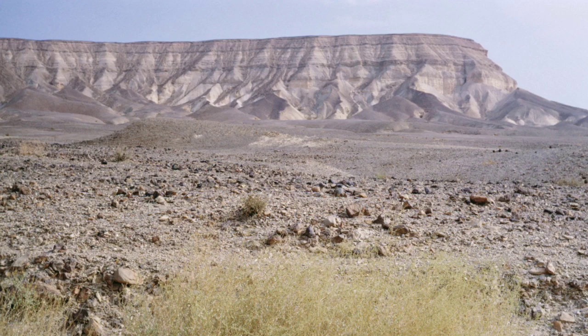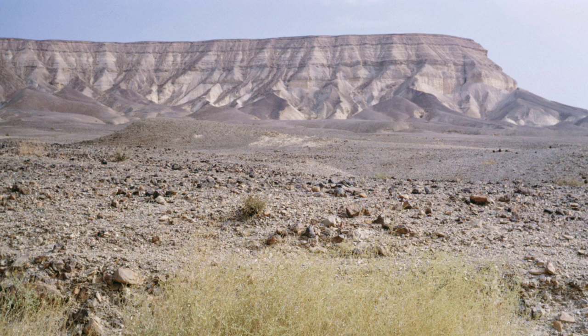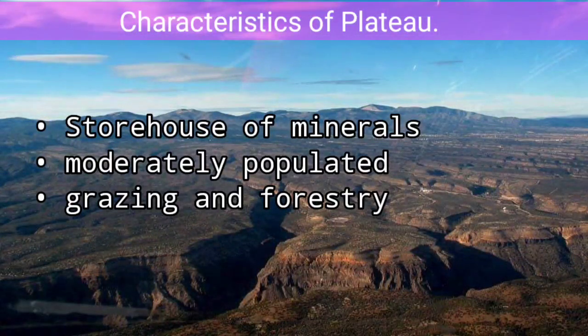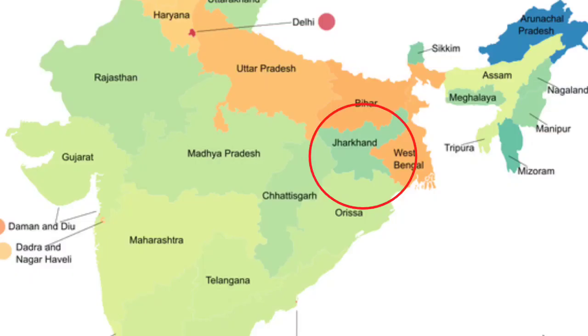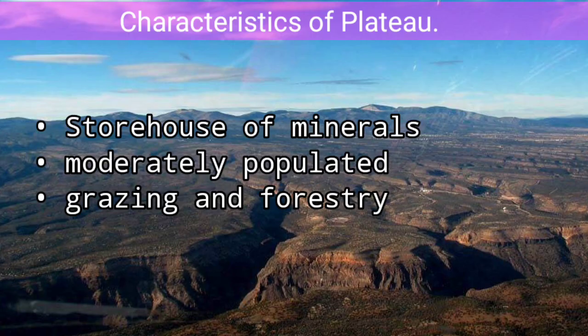An elevation of 150 meters above sea level with a flat top can be considered as a plateau. Plateaus have different characteristics: they are a storehouse of minerals, population is very moderate, and grazing and forestry activities are much more popular in plateau areas. For example, the Deccan Plateau of India has abundant mineral resources found in this area, so mining activities are very popular, and because of that the population is also moderate in this region.